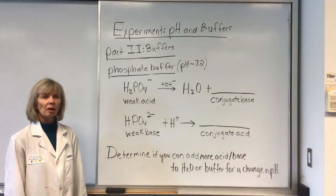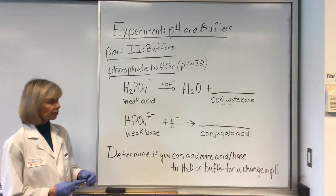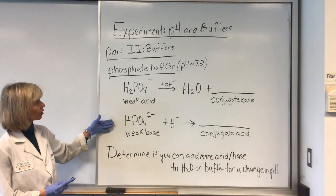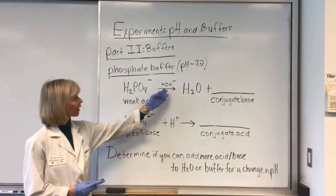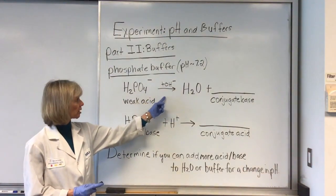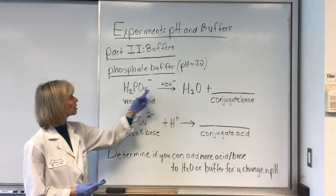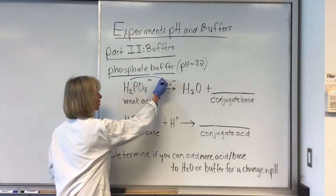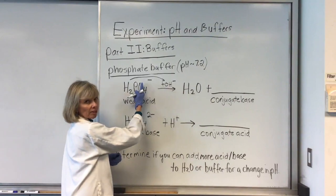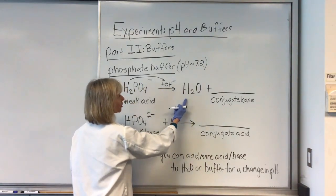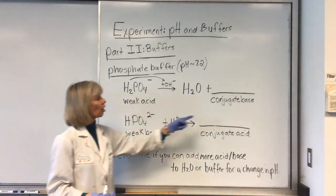Part two of today's lab is on buffers. A buffer is a solution that is resistant to pH change when you add a strong acid or a strong base to it. Our buffer system in today's lab is a phosphate buffer. Buffers are comprised of a weak acid and their conjugate weak base. The weak acid would react with a strong base represented here by hydroxide ions. An acid donates a hydrogen ion — a proton — to a base. When the acid loses that hydrogen ion, the OH⁻ gains it and we get water.